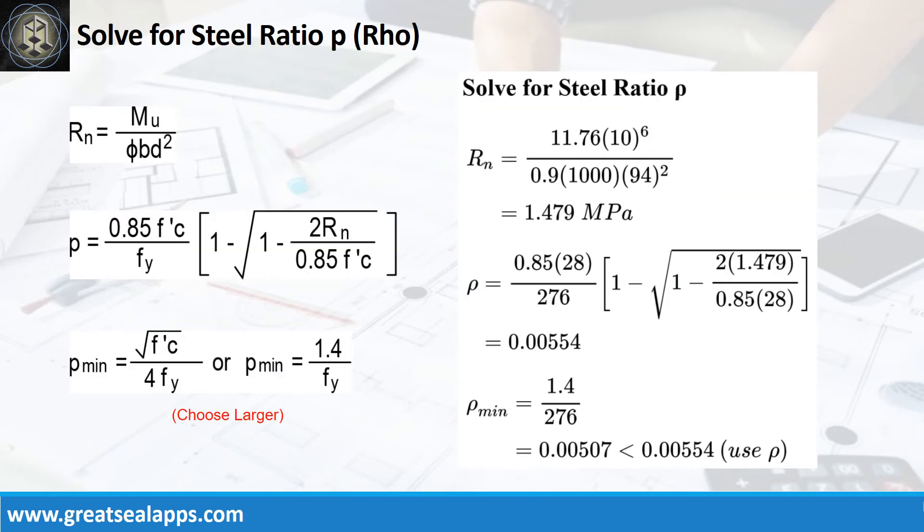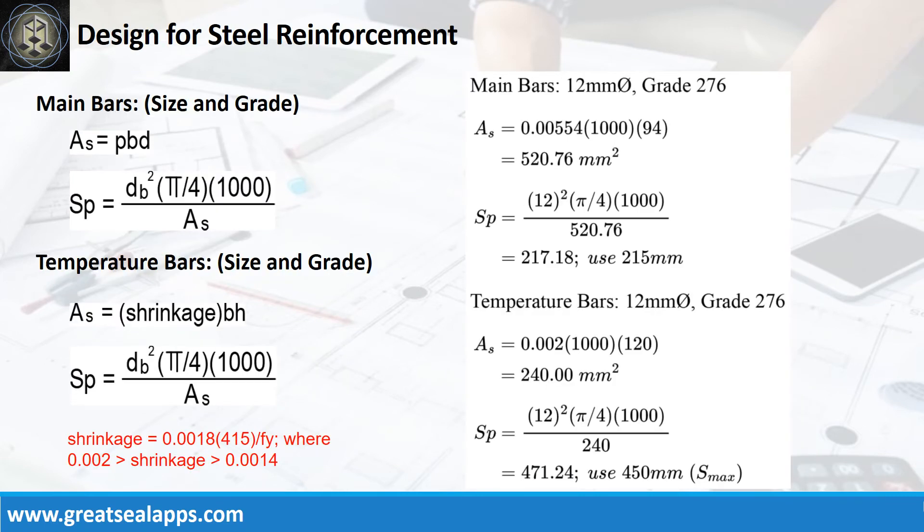Given maximum moment equals 11.76 kN per meter, B equals 1000 millimeters, and D equals 94 millimeters, the beam design ratio RN equals 1.479 MPa, and reinforcement ratio ρ equals 0.00554. Given ρ equals 0.00554, B equals 1000 millimeters, and D equals 94 millimeters, the area of steel for main bars is 520.76 square millimeters, and the spacing for 12 millimeter bar is 215 millimeters. The area of steel for temperature bars is 240 square millimeters, and the spacing for 12 millimeter bar is 450 millimeters.